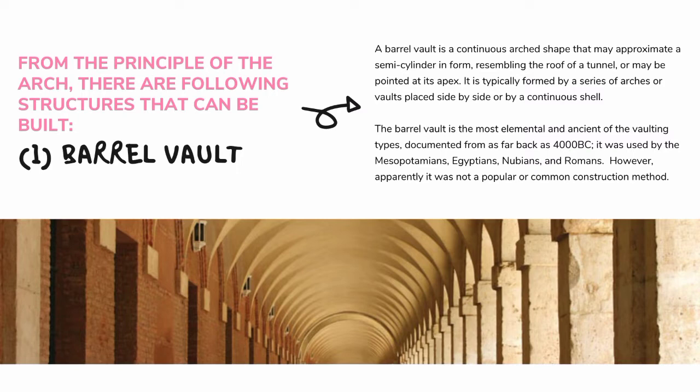First is the barrel vault. A barrel vault is a continuous arched shape that may approximate a semi-cylinder in form, resembling the roof of a tunnel, or may be pointed at its apex. It is typically formed by a series of arches or vaults placed side-by-side, or by a continuous shell. The barrel vault is the most elemental and ancient of the vaulting types, documented from as far back as 4000 BC.